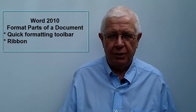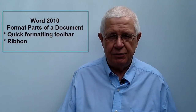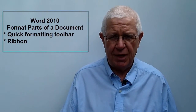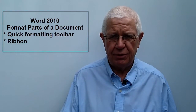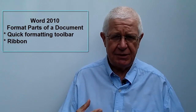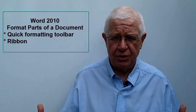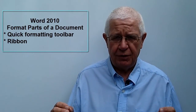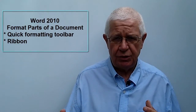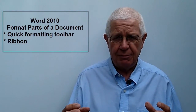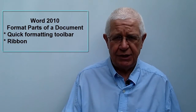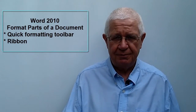A basic skill in Microsoft Word is the ability to format parts of your document. When I use the term format, I'm talking about being able to bold parts of your document, being able to underline parts of your document, maybe change the case of parts of your document, and so on. This short video shows you some really fast ways that you can use the quick formatting toolbar or the ribbon in Microsoft Word to change parts of an existing document.